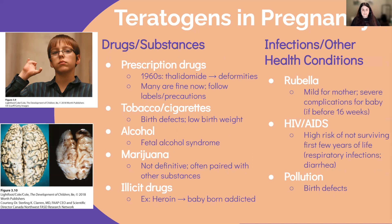Tobacco, cigarettes, and nicotine increase the risk for spontaneous abortion, stillbirth, neonatal death, and birth defects — for example, abnormal formation of arms, legs, and fingers. Infants are usually lower birth weight. The higher the dose, the more effects there are. Even secondhand exposure can affect the health of the child.